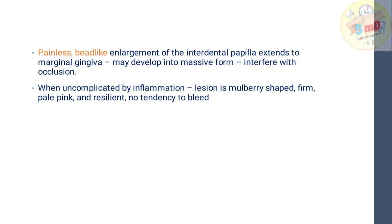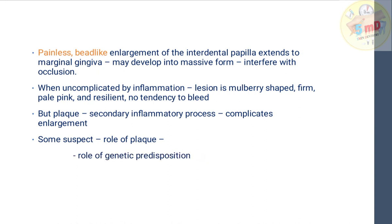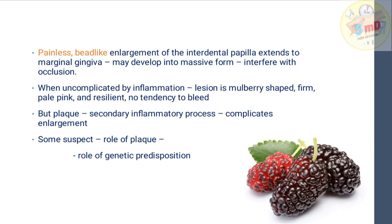When uncomplicated by inflammation, the lesion is mulberry-shaped — firm, pale pink, and resilient. Inflammation causes the erythematous nature; if not complicated by inflammation, it will not bleed. If plaque is present, it leads to a secondary inflammatory process — combined enlargement. The role of genetic predisposition is also suspected. The mulberry shape is the classic descriptor for drug-induced gingival enlargement.